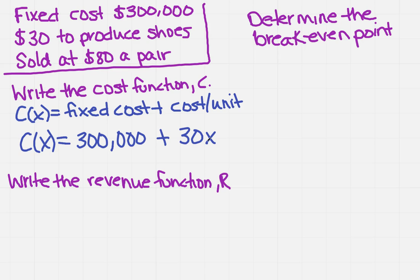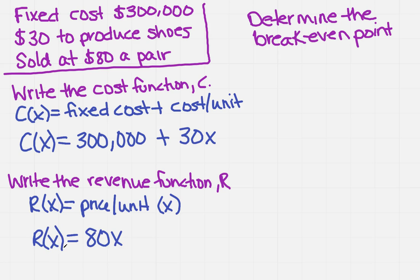Now in the next part we want to write the revenue. If we remember correctly, the revenue function is the price per unit sold times X. So if I do that, it says I sold the shoes for eighty dollars a pair, so that's going to be 80X. So those are really just plug and chug; you've got a formula and you're just plugging in what you know.